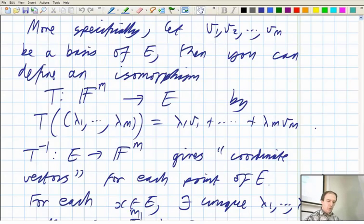So what you should do is you should fix some ordered basis, V1 up to Vm, in order at the basis of your vector space. And then you get a very nice isomorphism between your vector space and F to the M, where in one direction you are taking coordinate vectors, in the other direction you're using the coordinate vectors to give you back the elements of E.